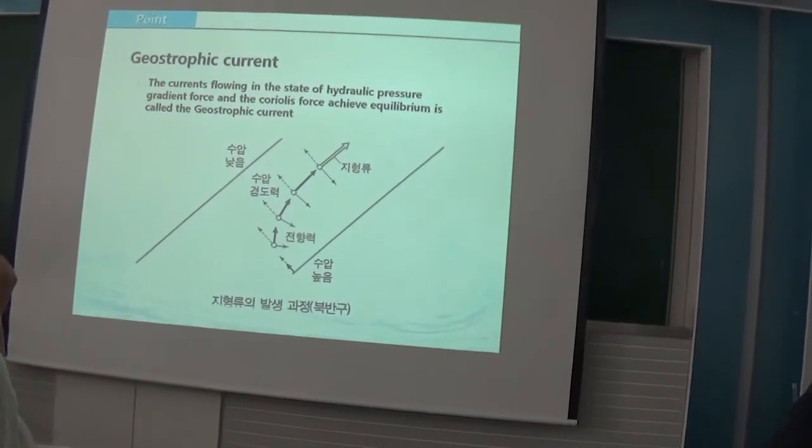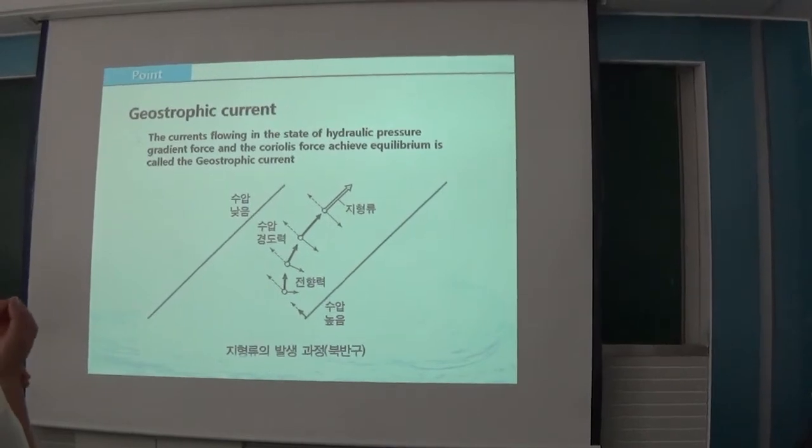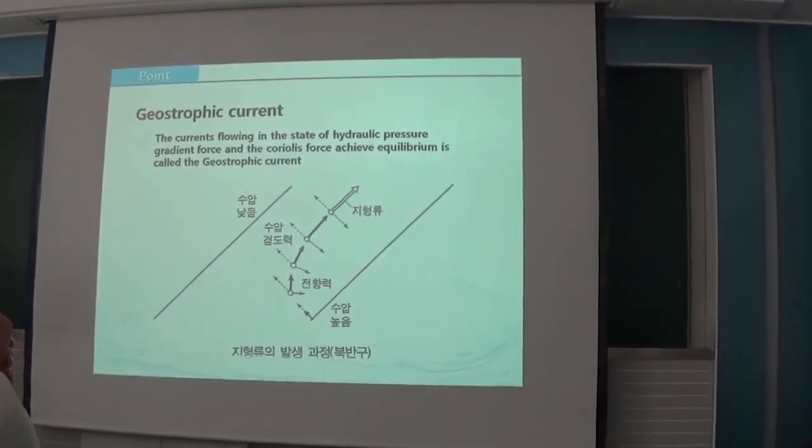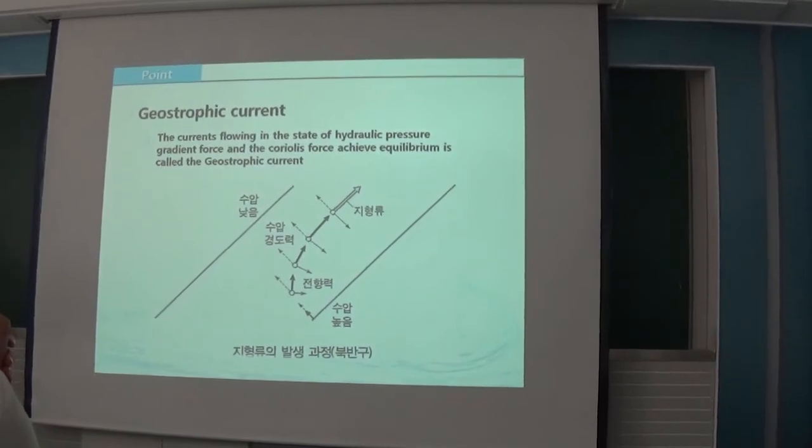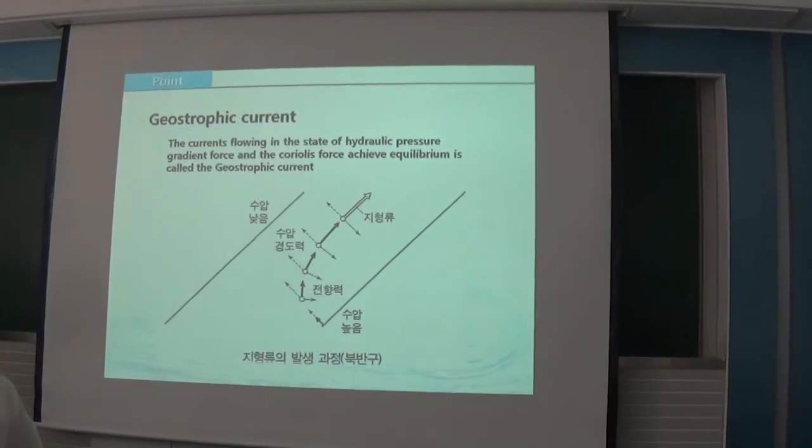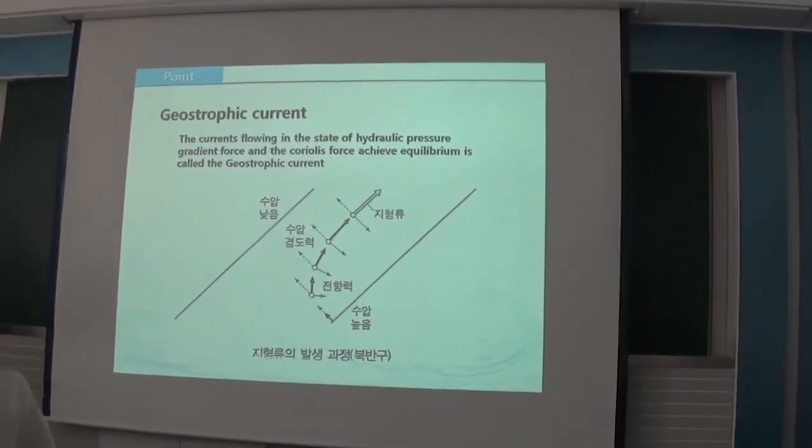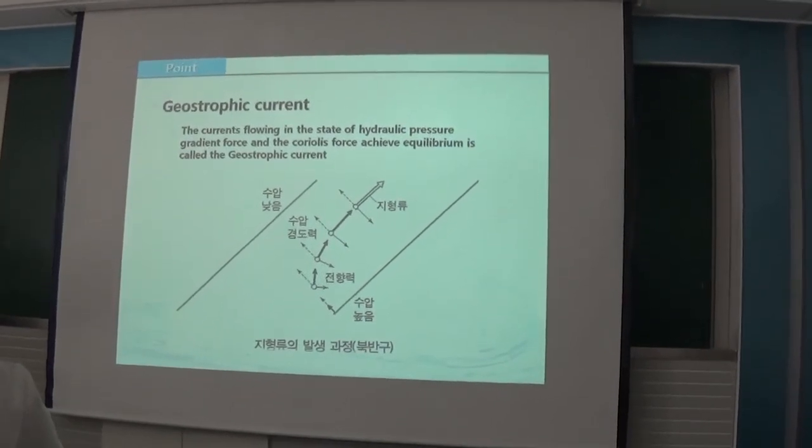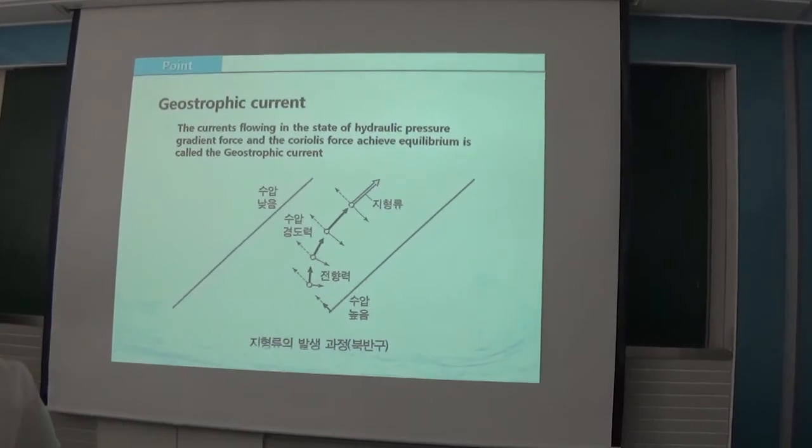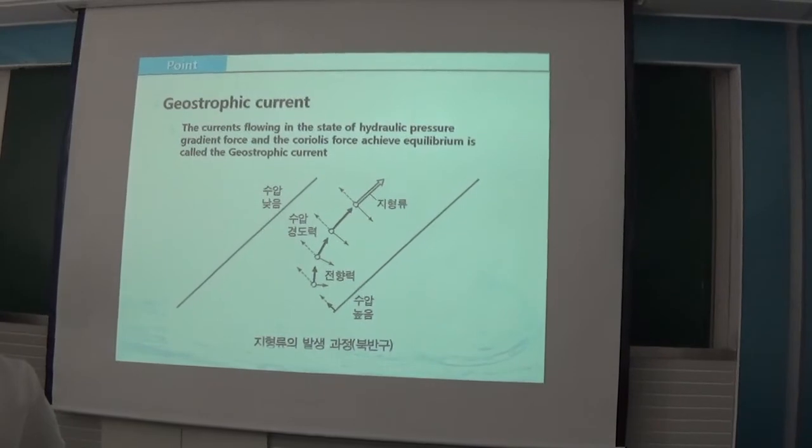The second is geostrophic current. It is current that flows when the pressure gradient force and the Coriolis force become balanced. The current in the ocean at depth, which is deeper than friction layer depth, appears as geostrophic current. In the northern hemisphere, geostrophic current appears to the right angular side of the pressure gradient force. Therefore, the surface is high and water pressure is large and water temperature is high at the right side of the geostrophic current.